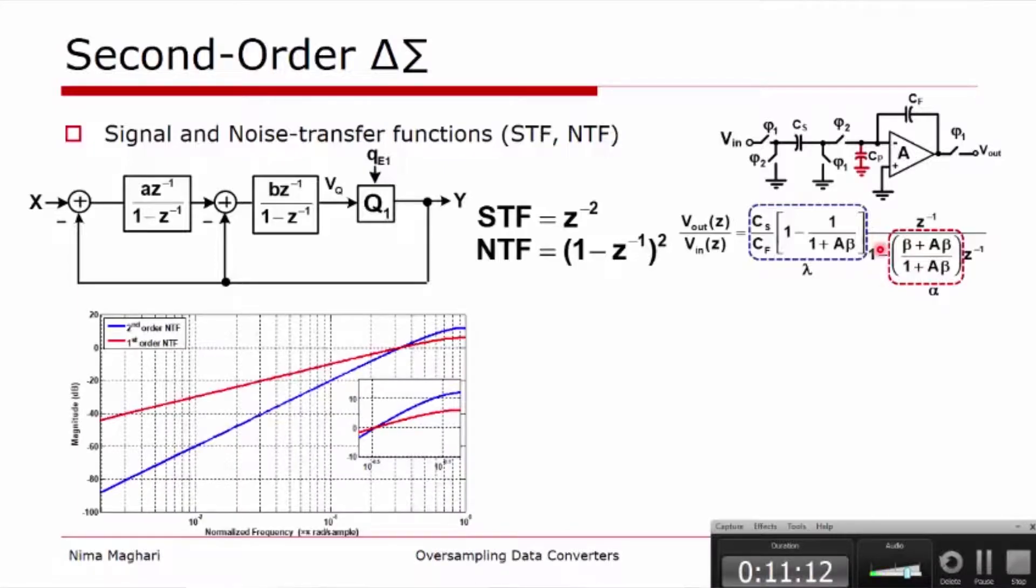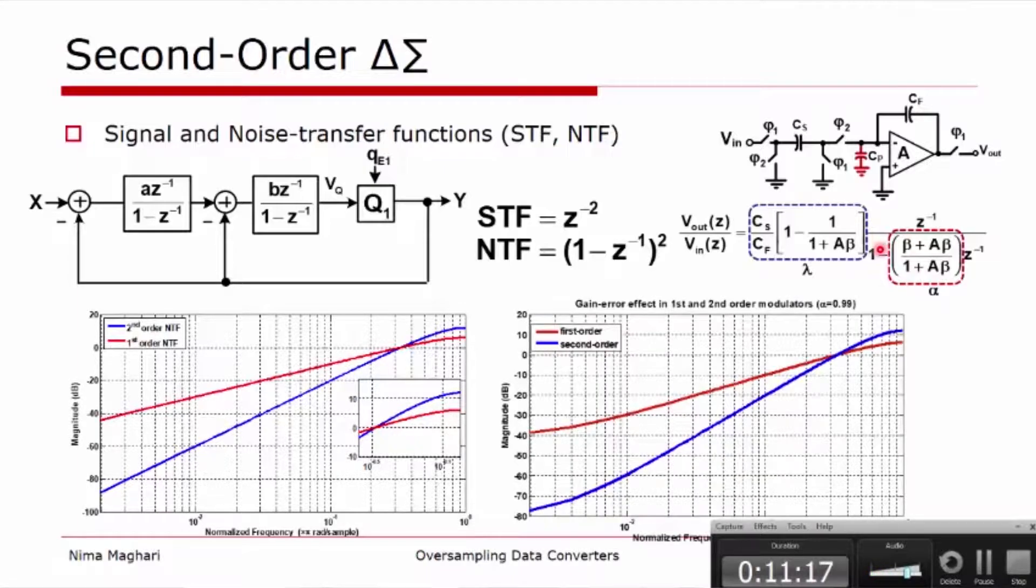So here I'm plotting the ideal first-order noise transfer function and the second-order noise transfer function. And here I'm showing the more realistic first-order and second-order where we have effectively gain of 40 dB in my loop architecture. You can see that the first order will give us a noise floor of negative 40 dB, which is the op-amp gain that we use. But the second order will give us an effective noise floor of negative 80 dB because that's the overall loop gain. If you would have gone to the third order, we could have gone even much better.